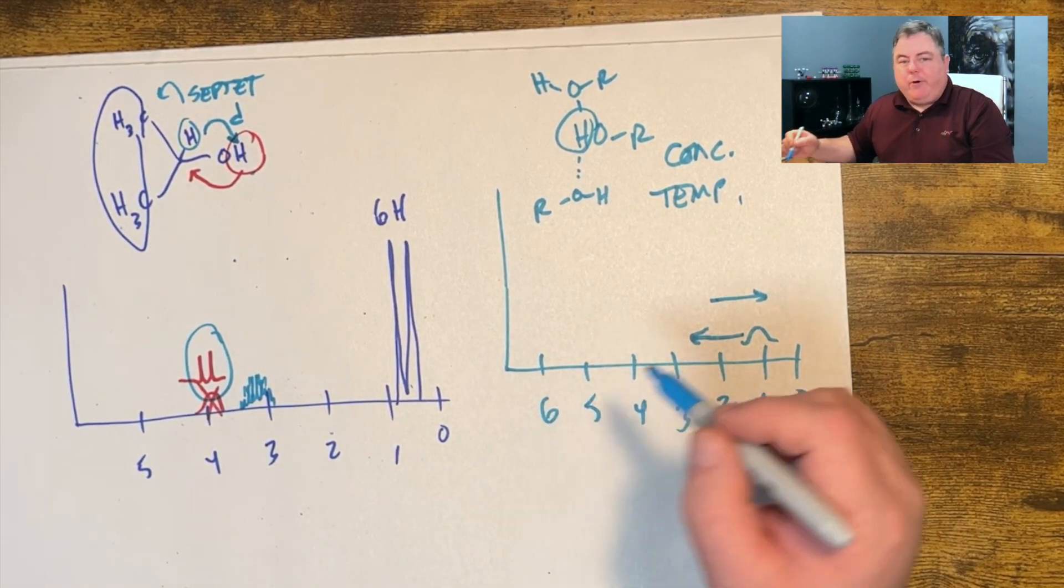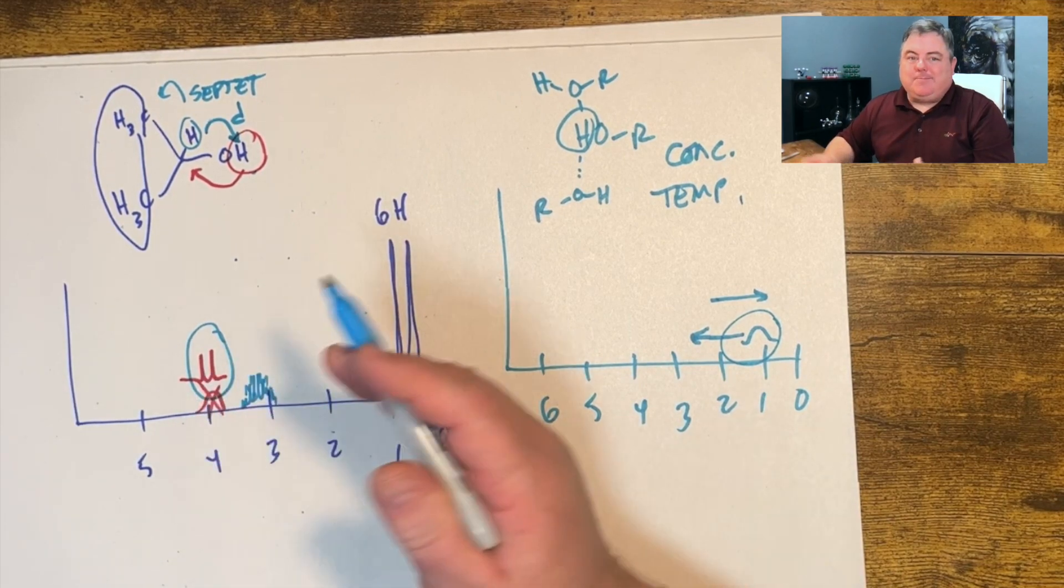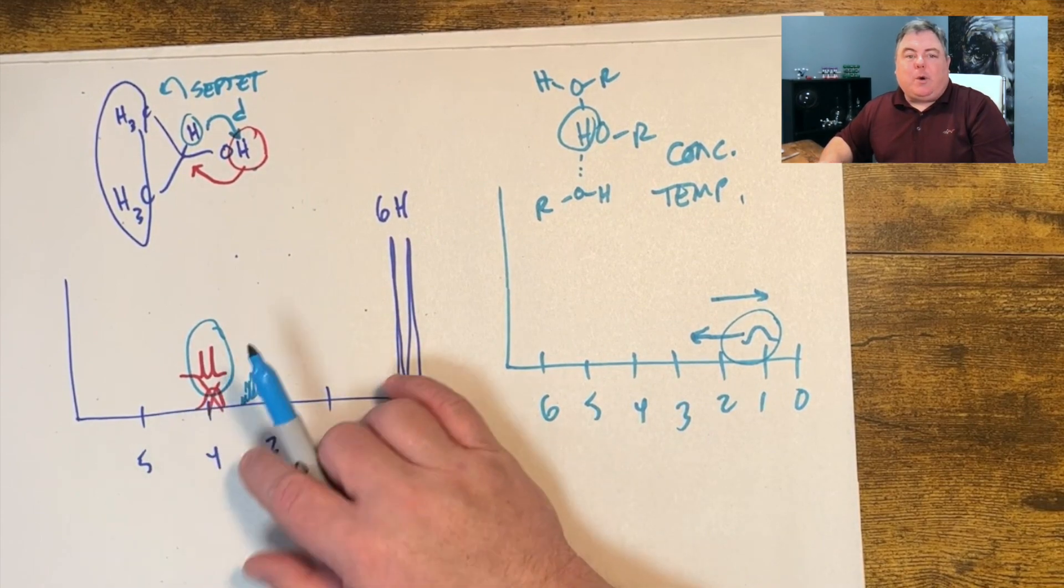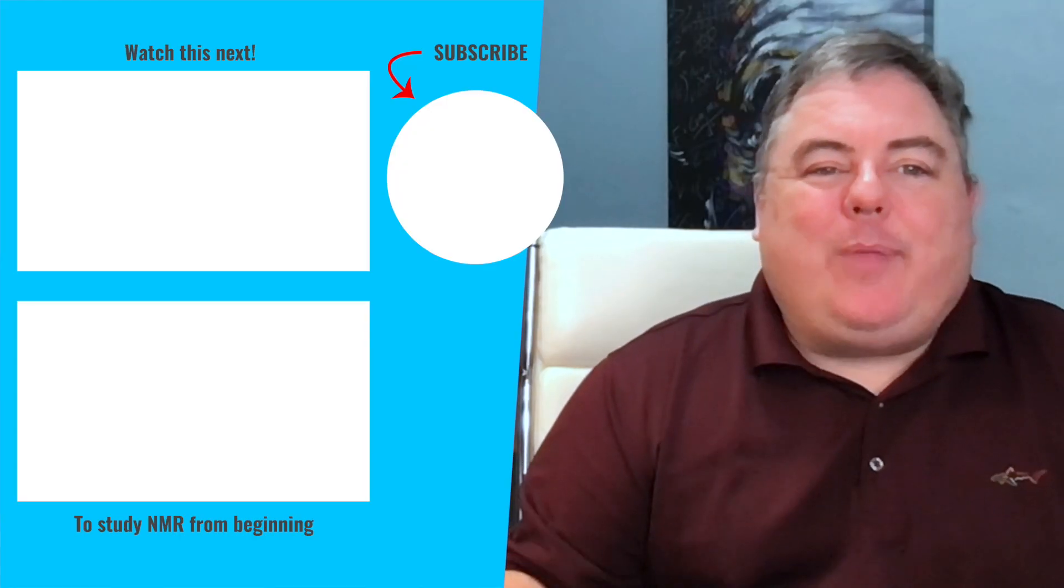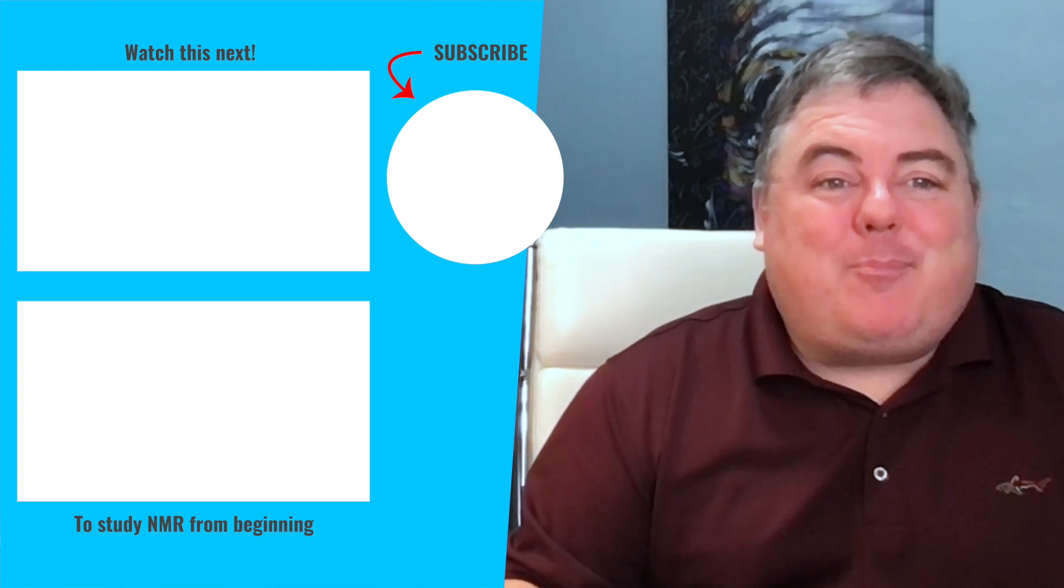What we're looking for for an OH or an NH is usually they're blobby, but sometimes they're not. So hopefully that's helpful. That's how the OH or NH peaks show up in a proton NMR. I hope that was helpful for you. Click on the next video in the series and learn more about proton NMR.